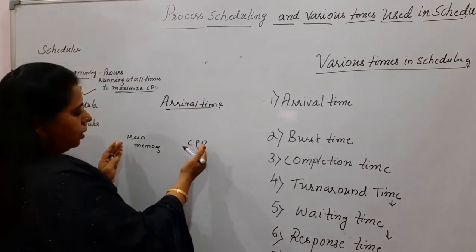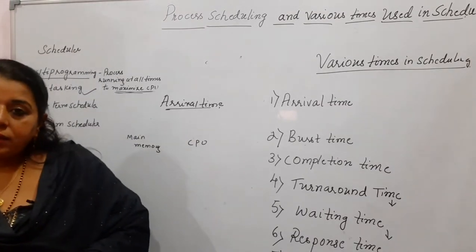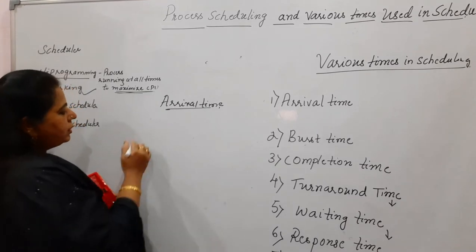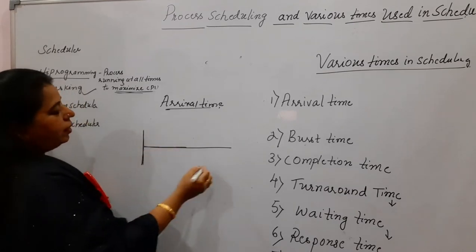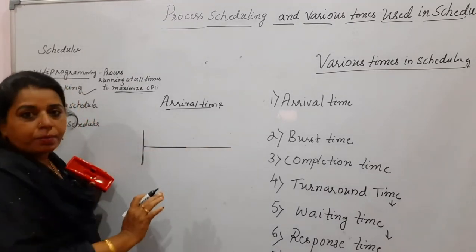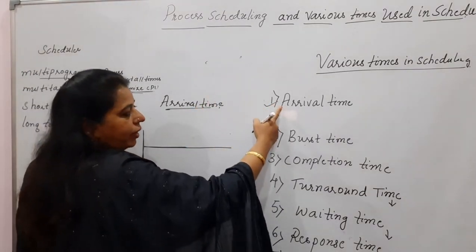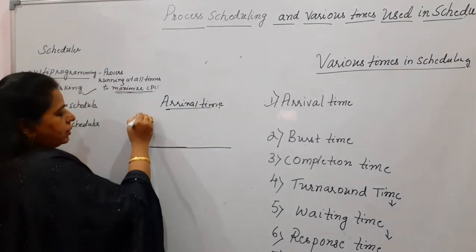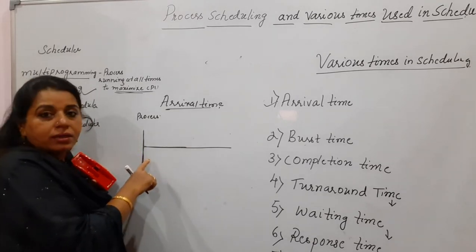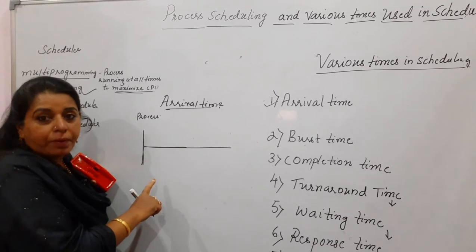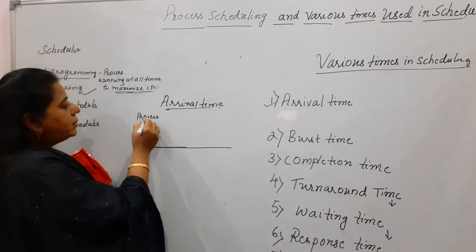We will take these two different components as part of our system. We are only trying to know what arrival time is. Arrival time is the time at which a process is brought into the main memory — that is, the time at which the process is in the ready state.